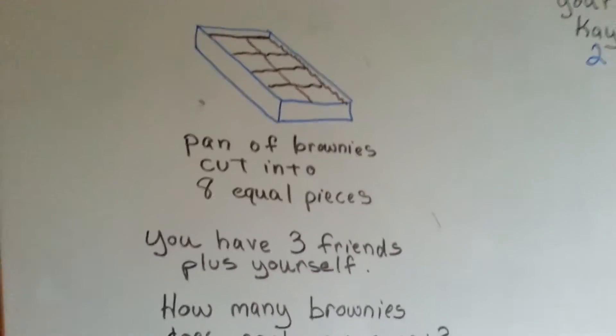You each got two of the six jelly beans. Alright, here we have a pan of brownies. Mmm, yum.